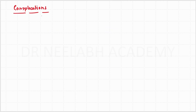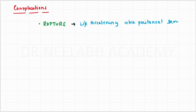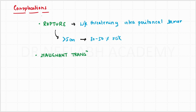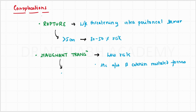Coming on to the complications, the first important complication is rupture, which can cause life-threatening intraperitoneal hemorrhage. These lesions have a higher risk if they are more than 5 centimeters, with around 30 to 50% risk present. The next complication can be malignant transformation, which is a low risk of about 3 to 5%, most commonly associated with beta-catenin mutated forms.